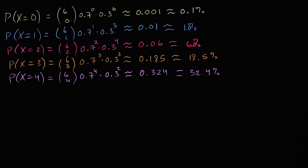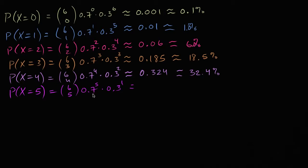The probability that our random variable is equal to five is going to be six choose five, times 0.7 to the fifth power, times 0.3 to the first power, and that is going to be roughly 0.303, which is 30.3%.